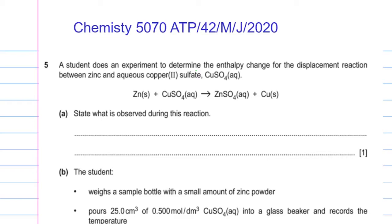In this question a student does an experiment to determine the enthalpy change for the displacement reaction between zinc and aqueous copper(II) sulphate. The first part of the question asks: state what is observed during this reaction.